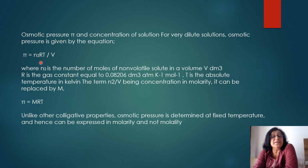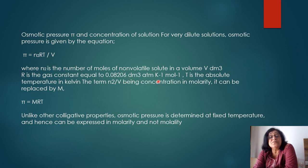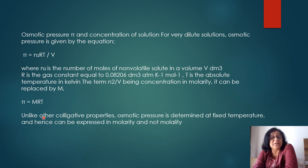Osmotic pressure π is given by the formula π = n2RT/V, where n2 is the number of moles of the non-volatile solute, V is the volume in dm³, R is the gas constant (0.08206 dm³·atm/K/mol), and T is temperature in Kelvin. This is also written as π = MRT, where M is the molarity of the solution.